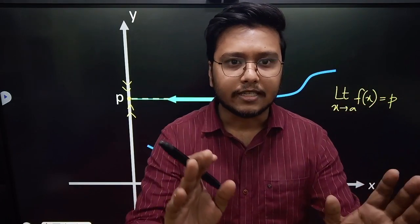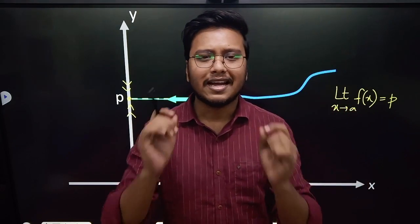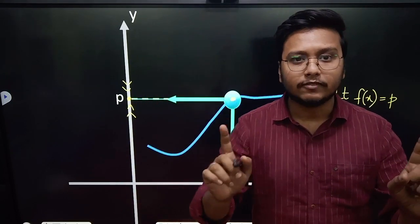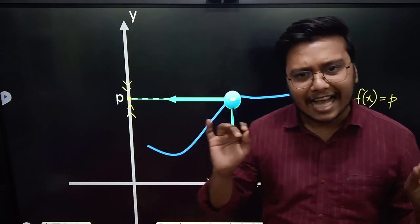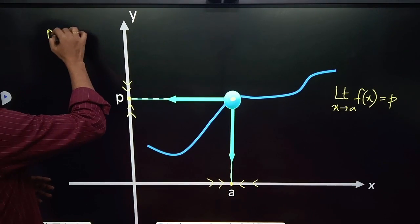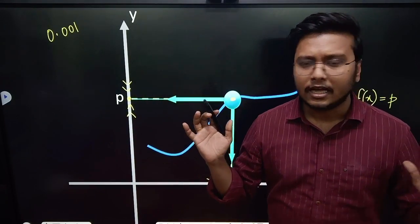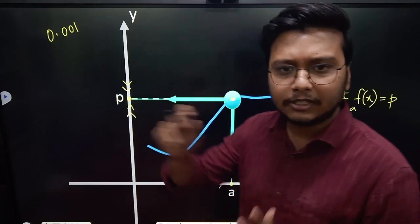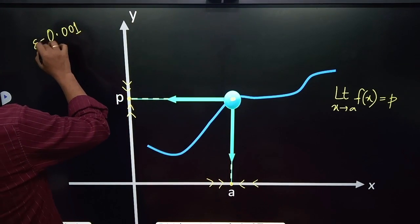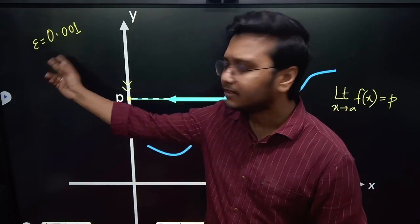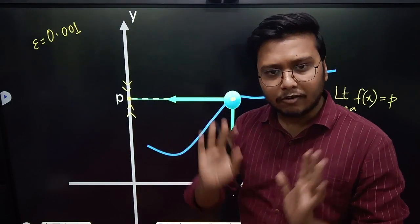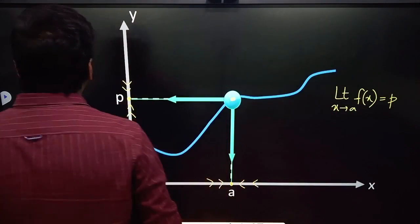Now I am coming to the very important part. Suppose you people are volunteers and I am doing an experiment. I ask you to tell me a very small positive number — as small as you can, it does not matter. Let's say you have told me the value 0.001. You could have taken many more zeros after the decimal, like 0.0000...1. Whatever you tell me, I call that number epsilon.